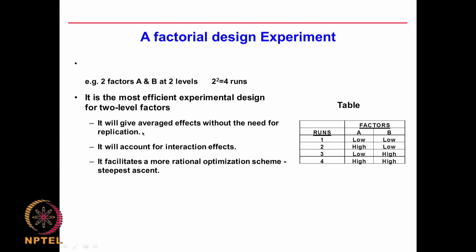Factorial designs are very efficient. They give averaged effects without the need for replication, can detect interactions since we change many variables simultaneously, and give a good basis for optimization. For a 2^2 design with 2 factors A and B at 2 levels, I run 4 experiments: A low + B low, A high + B low, A low + B high, A high + B high — so both factors are examined at low and high levels, and interactions can be studied.